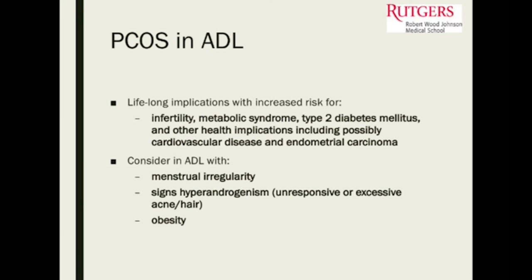PCOS in the adolescent patient has lifelong implications — it can lead to infertility, is associated with metabolic syndrome and type 2 diabetes. Those who are chronically anovulatory are at risk for endometrial carcinoma or endometrial hyperplasia over time. It's important to identify this, think about it, and properly treat. Prevention is key — the earlier we can pick up a diagnosis, the more we can help a patient.